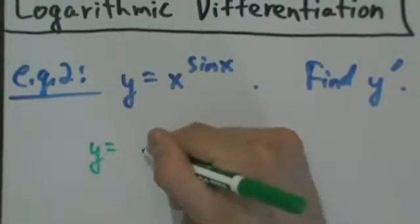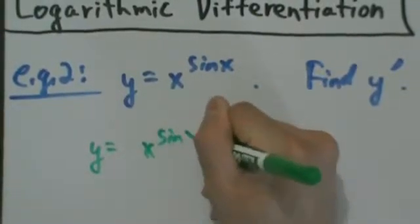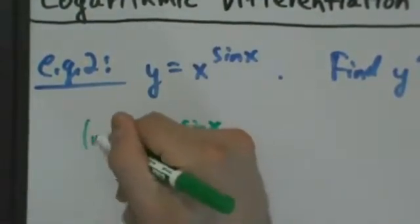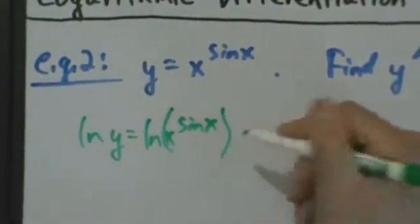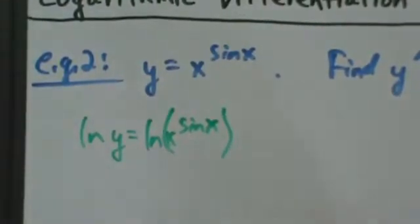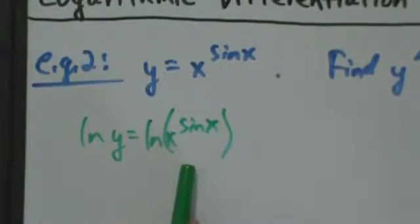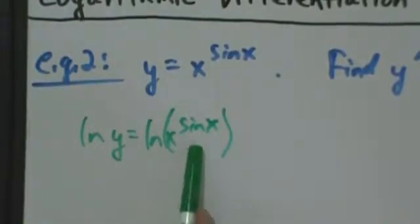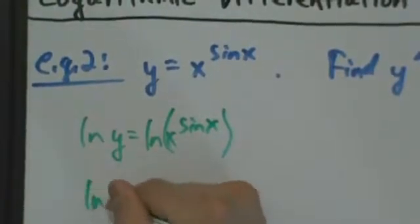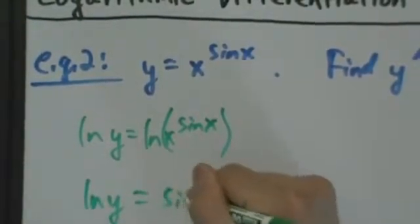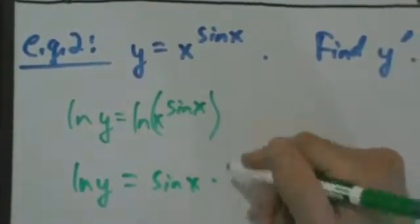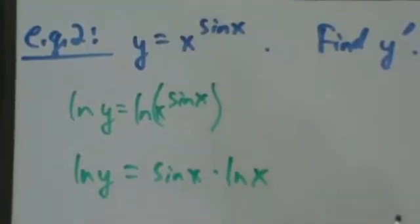We have y equals x to the sine of x. The first step is to take the natural log of both sides. So natural log of y equals natural log of x to the sine of x. The second step is to use the power rule for logs from precalculus — you take out the exponent and write it as a factor. So natural log of y equals sine of x times natural log of x.